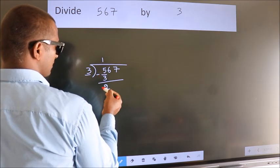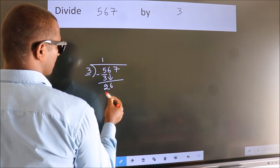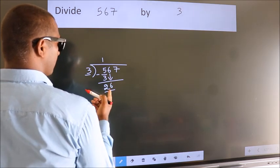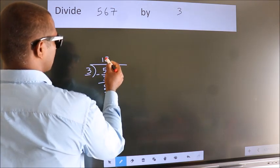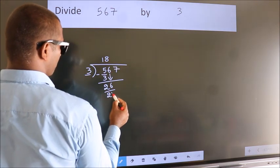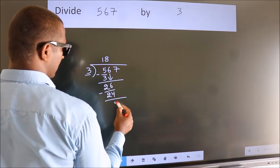After this, bring down the beside number. So, 6 down. So, 26. A number close to 26 in the 3 table is 3 8s 24. Now we subtract. We get 2.